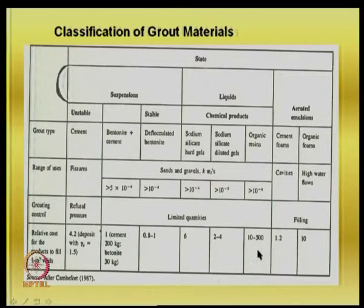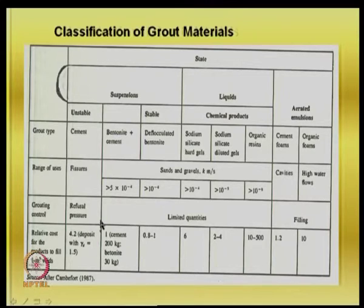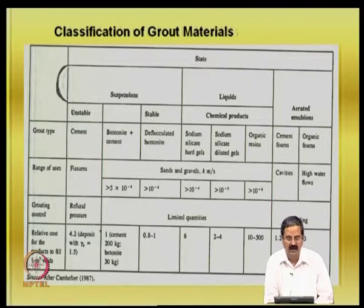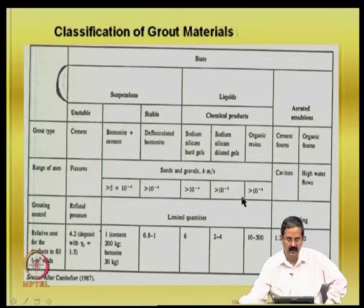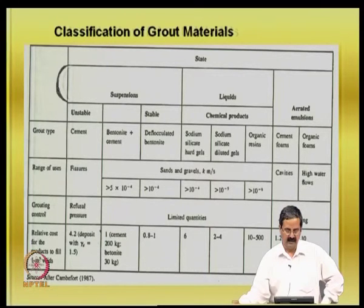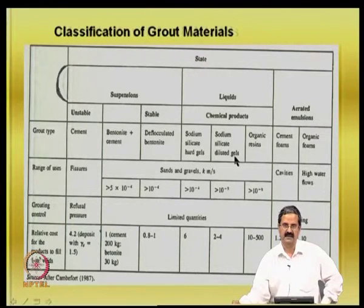Aerated emulsions like cement foams and organic foams are also used to fill cavities and handle high water flows. Laboratory studies are important — you add a certain amount of cement, bentonite, or chemical product, do lot of analysis and laboratory testing, and develop criteria. Essentially, you take an undisturbed sample from the soil, looking for strength improvement and permeability reduction. You test which proportion of material gives the best performance according to your criteria, then use it in the field with adequate margin of safety.